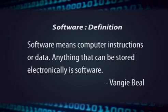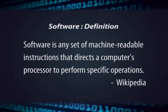Software means computer instructions or data. Anything that can be stored electronically is software. Software is any set of machine-readable instructions that directs a computer's processor to perform specific operations.